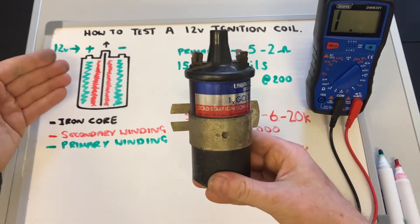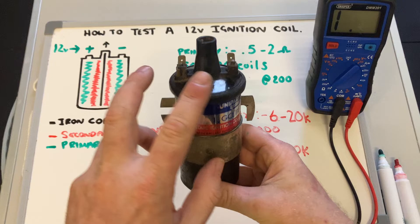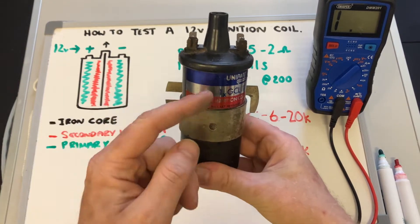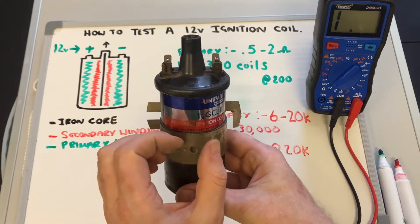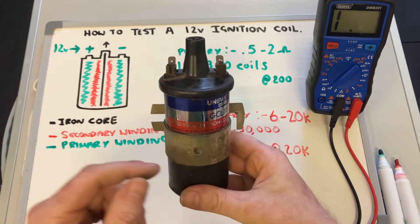First of all, if I was to do a cross-section of this, you'd get something that looks a little bit like this. So on the outside, on these two contacts, you've got a primary coil that goes around the outside, and then within that you've got the secondary coil, which is a lot tighter in its windings.